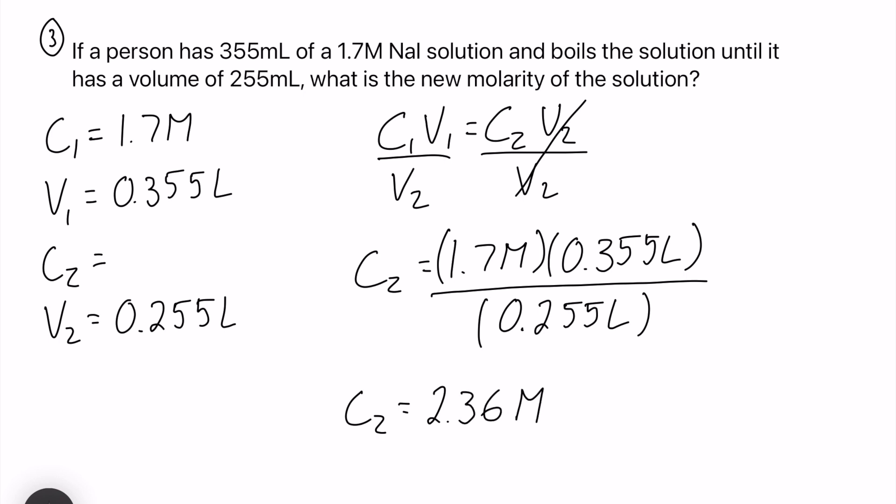Let's check sig figs quick. We have 3, 2 and 3, so let's keep 2. We can round this to 2.4 molar and that makes sense since our volume decreased as we boiled water off. So it becomes less diluted. This does make sense for us.